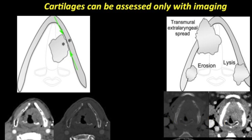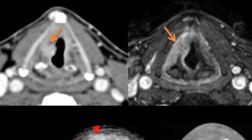MRI is a problem-solving tool in the management of laryngeal malignancies. In the first figure, the cartilage is not ossified and the white line of the thyroid cartilage is seen. There is an enhancing tumor on CT involving the paraglottic space, and MRI in this case shows that the cartilage is normal with only paraglottic space involvement — this is T3 disease.